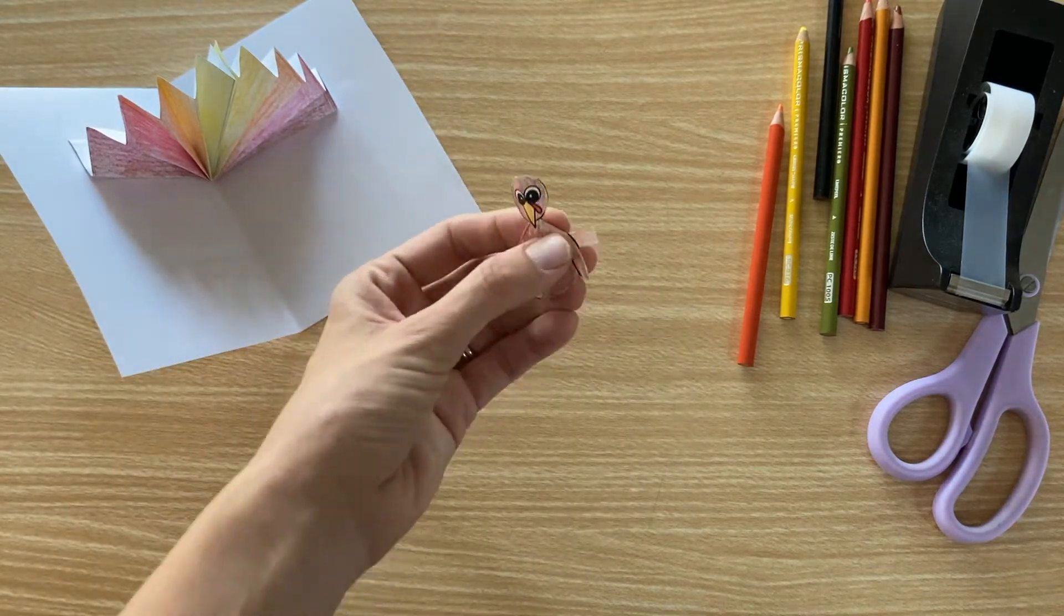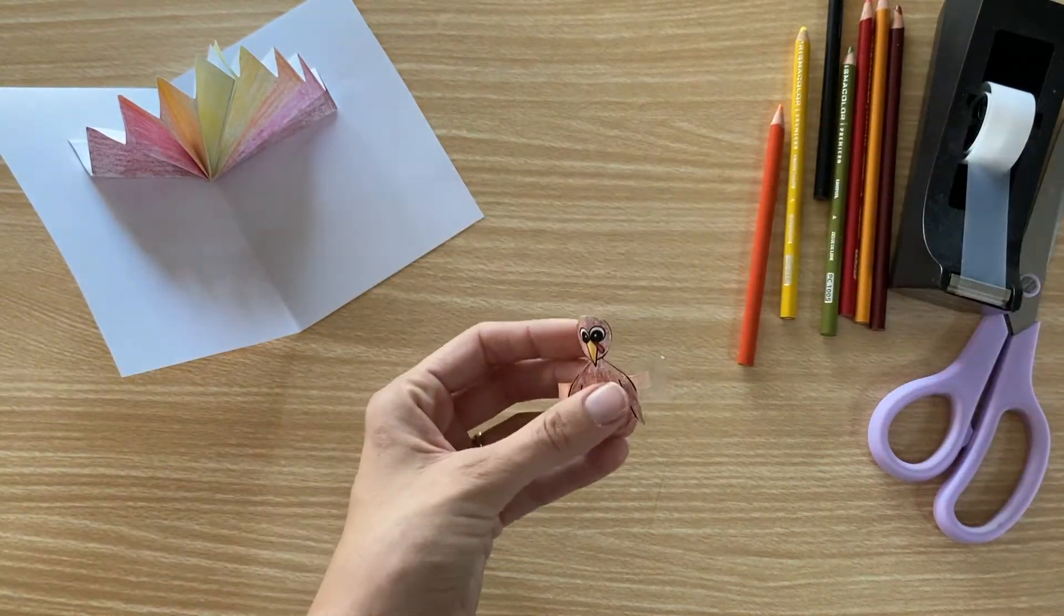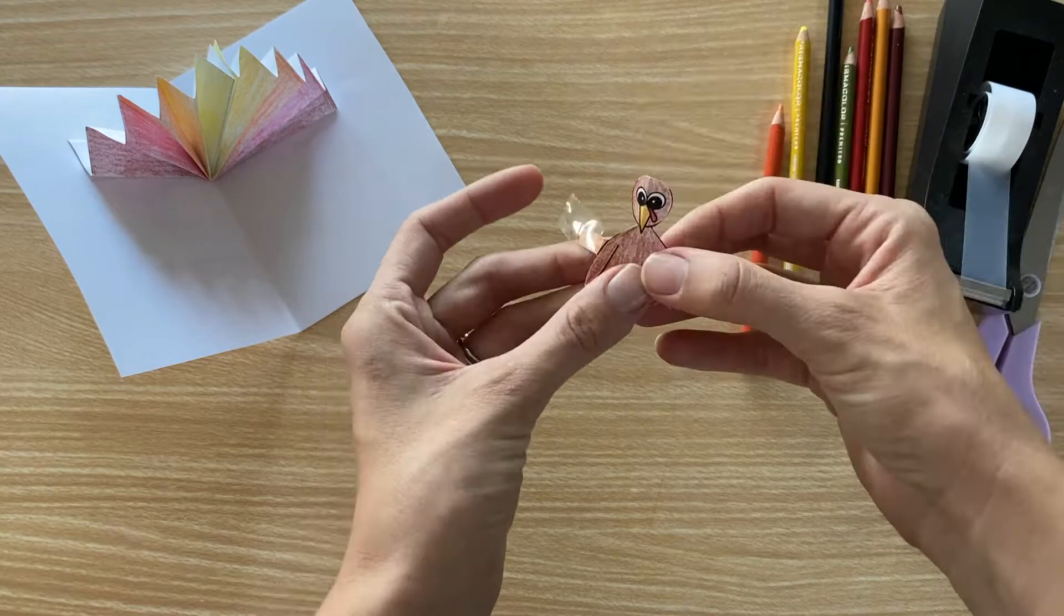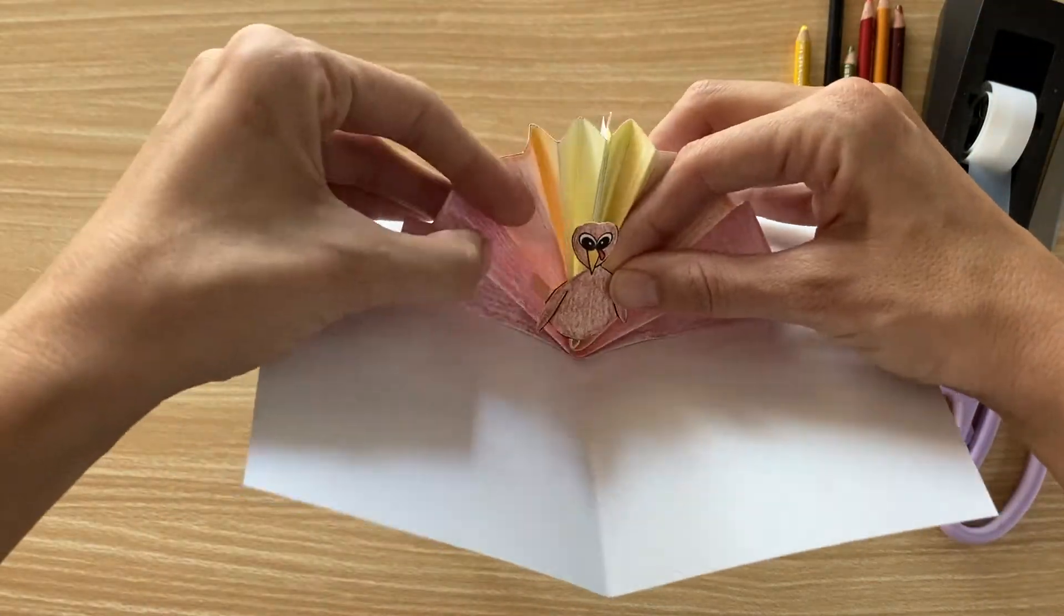Fold back the side tabs and use small pieces of tape to attach the turkey's body to its tail, tucking the tabs back into the feathers.